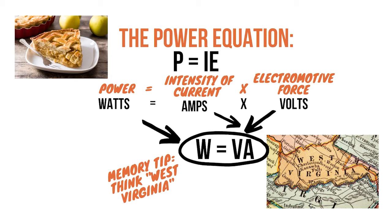Just remember that V is actually E and A is actually I. The math is the same, but it's easy to get them mixed up. Because of how math works, if you know any two of the units, you can easily figure out the third. Watts equals volts times amps. Amps equals watts divided by volts. Volts equals watts divided by amps. If you know watts and volts, you can figure out the amps. If you know amps and watts, you can figure out the volts. You just have to do the math.